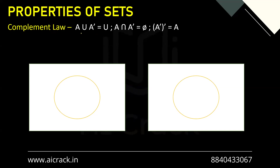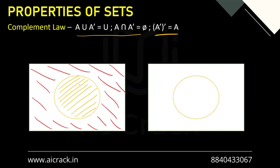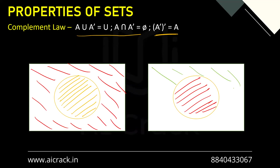Now let's talk about complement law: A union A complement equals the universal set, A intersection A complement equals phi, and the complement of A complement equals A. For A union A complement — A is this region and the entire external region is A complement. Taking the union of both covers all elements of the universal set. For A intersection A complement, there is clearly nothing in common between A and its complement — they are disjoint — and that's why it comes out to be the null set.